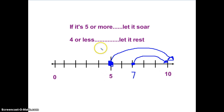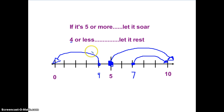But if it's four or less — so here's four — the number is going to rest, which means it rounds down to the lower ten. So let's say the number was three, that's four or less, so the number would rest. We would send it down to the lower number — the lower ten, the lower hundred, the lower thousand. So five or more, let it soar; four or less, let it rest, like the song.